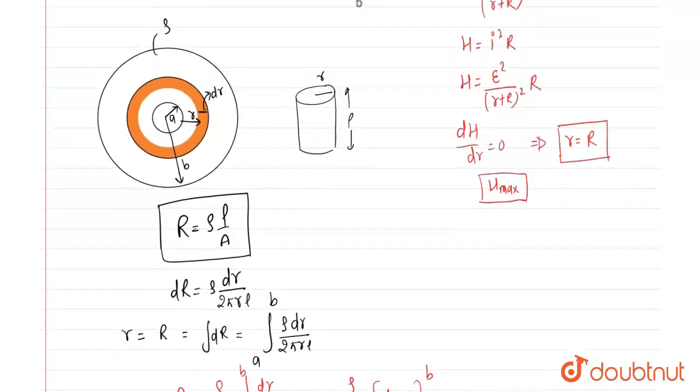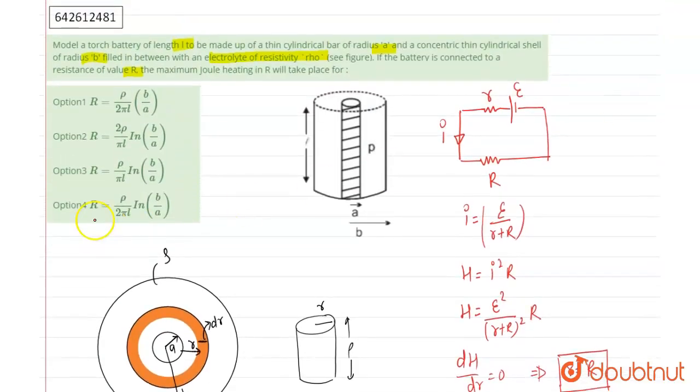Now you can see that which option is correct. So option 4, option 4 is correct. R is equal to rho upon 2 pi L ln B by A.